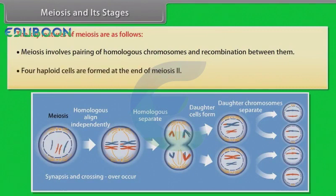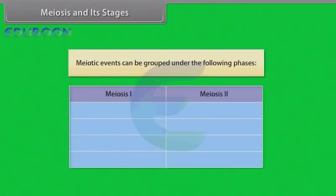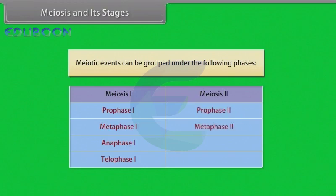Meiosis involves pairing of homologous chromosomes and recombination between them. Four haploid cells are formed at the end of meiosis II. Meiotic events can be grouped under the following phases: prophase I, metaphase I, anaphase I, and telophase I come under meiosis I, while prophase II, metaphase II, anaphase II, and telophase II come under meiosis II.